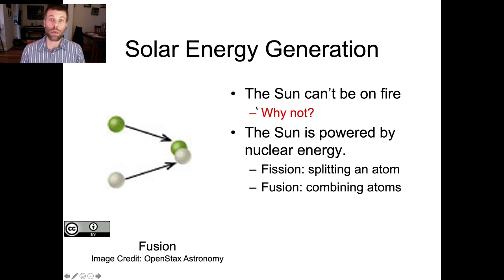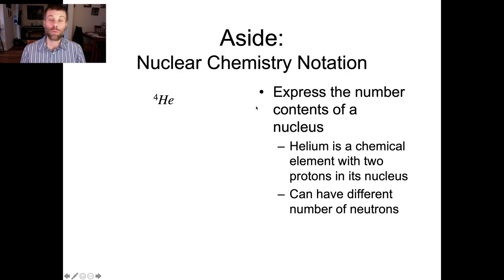The other process that we see in the Sun and also in the most powerful nuclear weapons is what we call nuclear fusion. So rather than splitting one heavy nucleus, two light nuclei get combined to make one heavier one. That's what happens in the Sun. Now before I can dig into how that happens, we need to take a brief aside and talk about some notation issues.